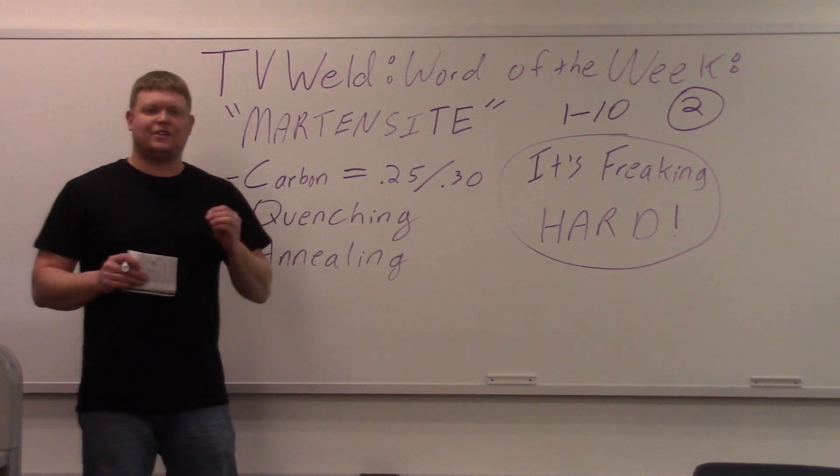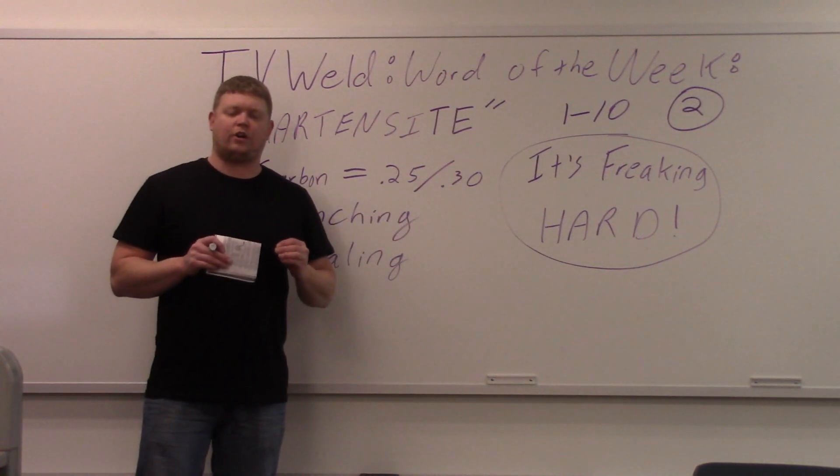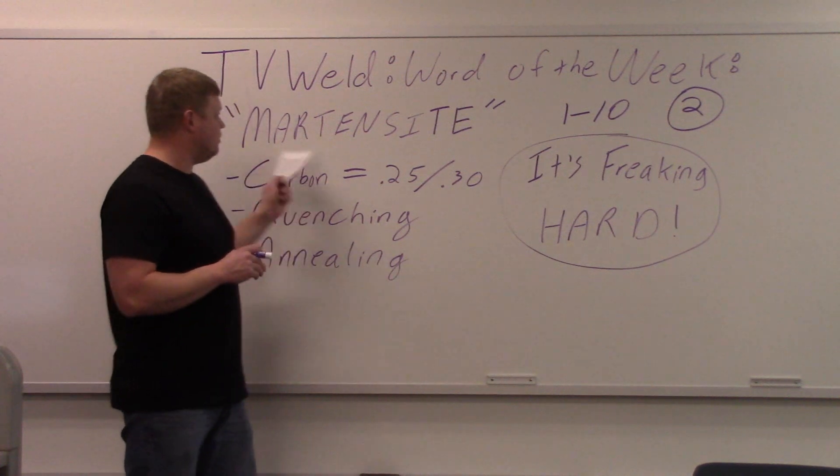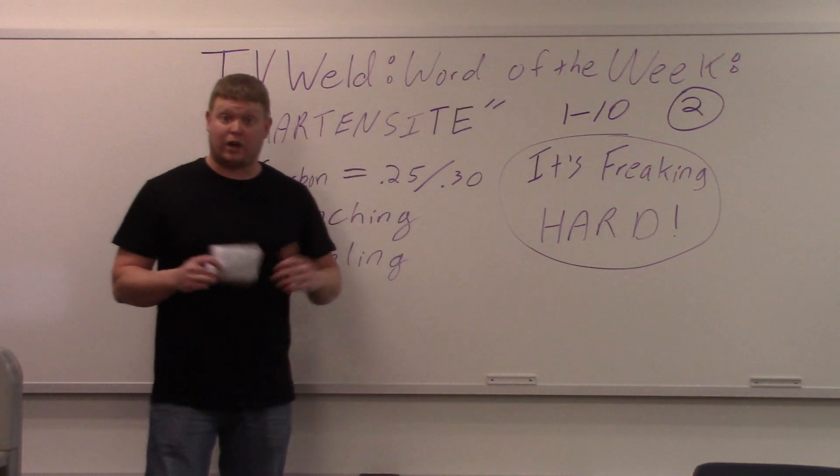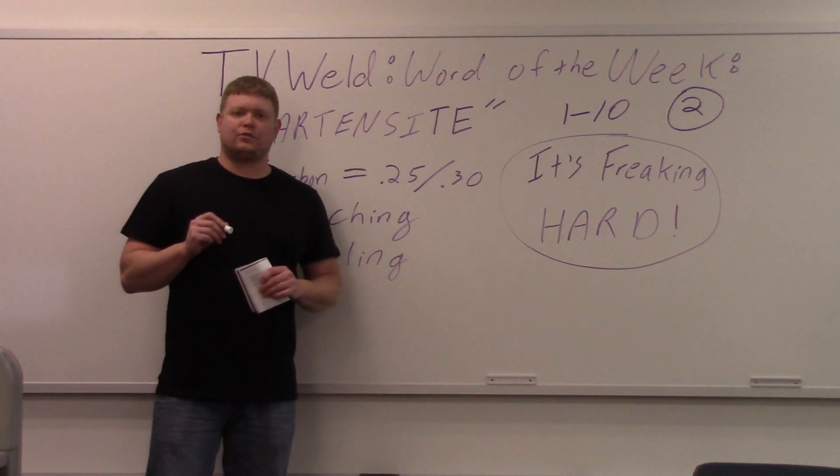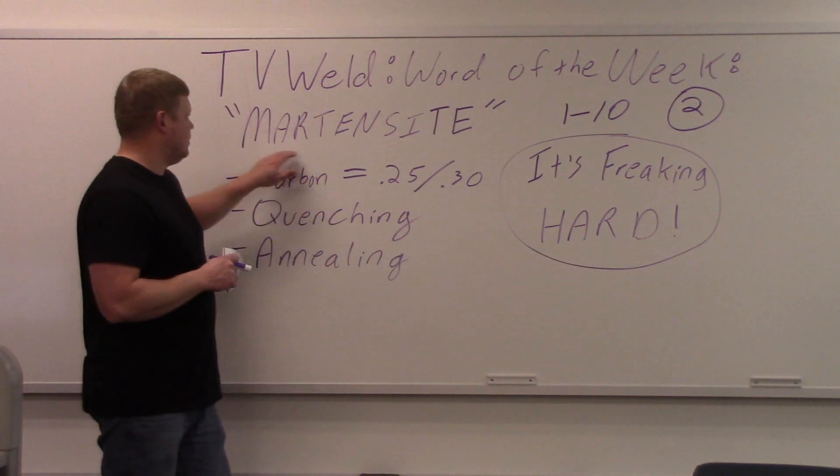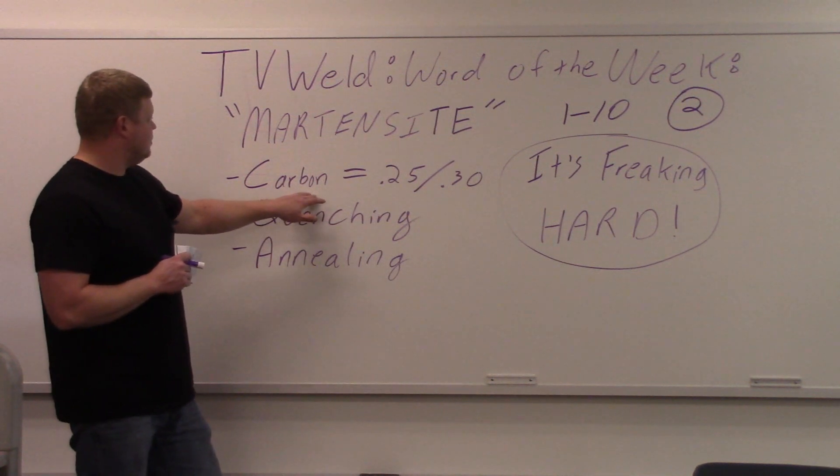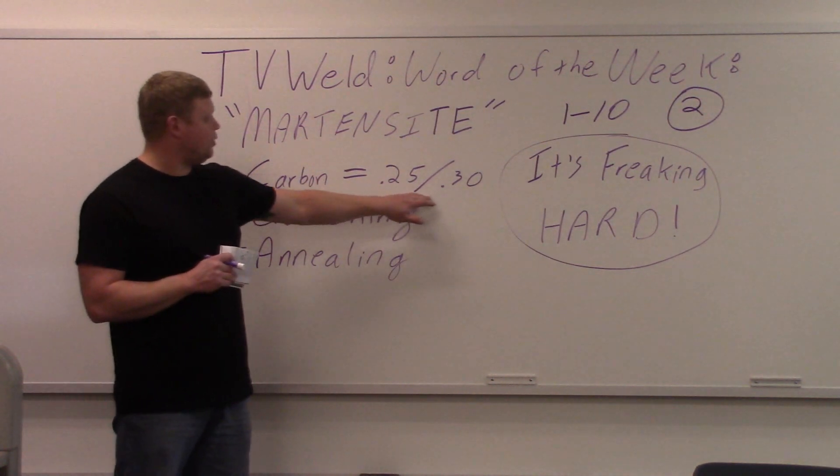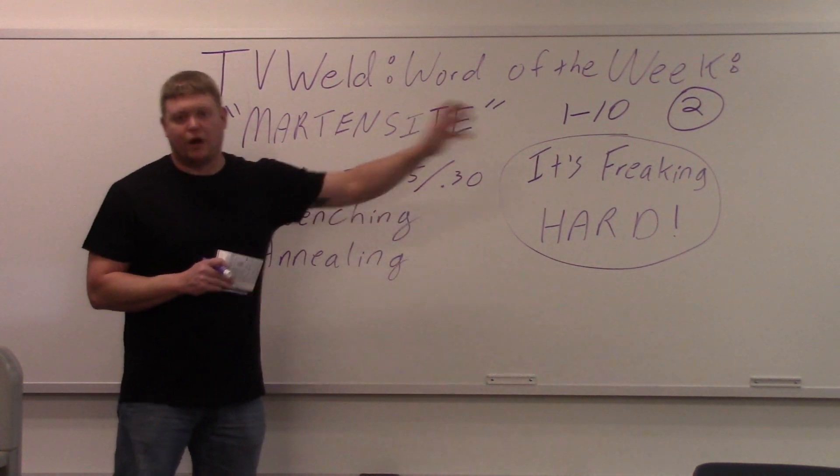You have to have at least that amount of carbon in a carbon steel in order for it to harden into Martensite. If there's not enough carbon, like in low carbon steels, that's why welders weld on low carbon steels. There's not enough carbon in there to harden into Martensite. So the big deal here is carbon has to at least have 0.25, 0.30, and above.